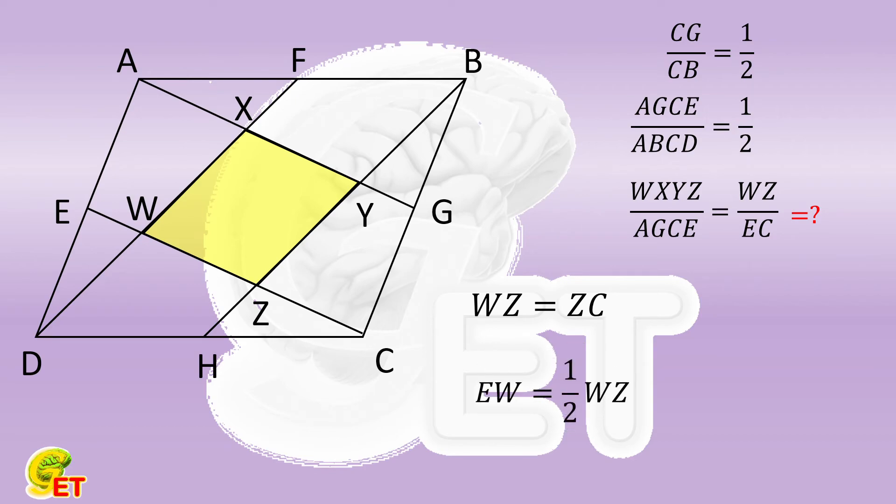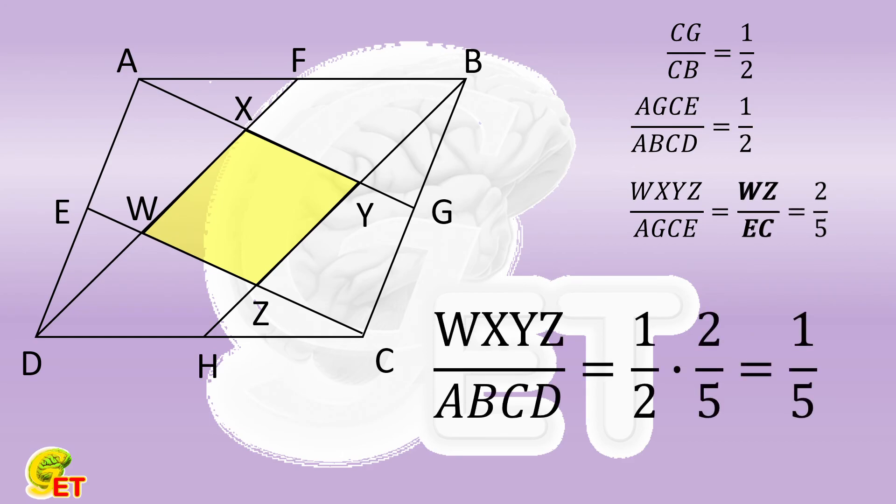Putting them all together, we will have the ratio of WZ to EC is 2 to 5. Therefore, the ratio of the area of parallelogram WXYZ to that of ABCD is 1/2 multiplied by 2/5. So it is equal to 1/5. So we make it. Thank you for watching, and see you next time.